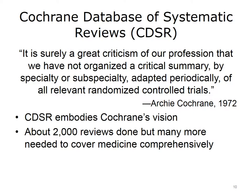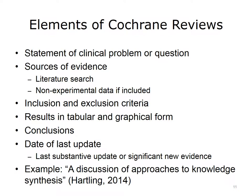A Cochrane review is a systematic review that includes a statement of the clinical problem or question and sources of evidence, typically gathered from a literature search. A small number of Cochrane reviews also include non-experimental data, although that practice is somewhat controversial. The inclusion and exclusion criteria for evidence are stated, and the results are presented in both tabulated and graphical form. Next are the conclusions that come from the review, and if there's a meta-analysis, those results are described. Cochrane reviews are maintained in an online collection of databases, include the date of the last substantive update, and are meant to be dynamic, living documents — not just reviews published in a journal — with the goal of being continuously updated.